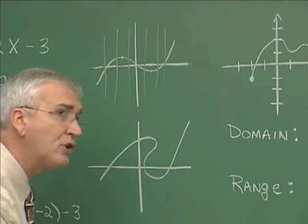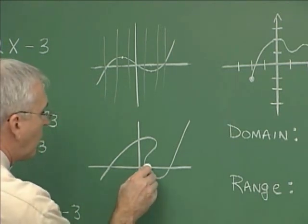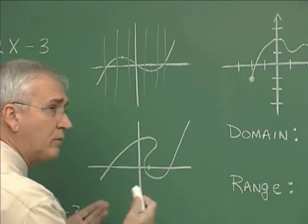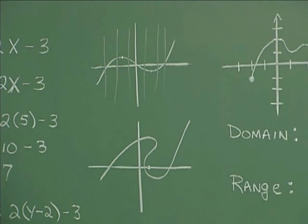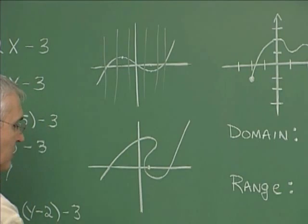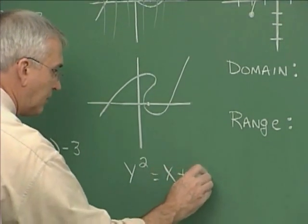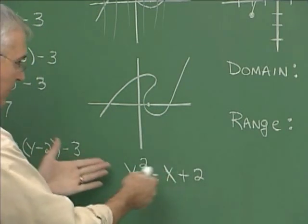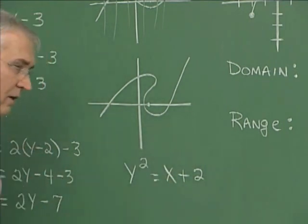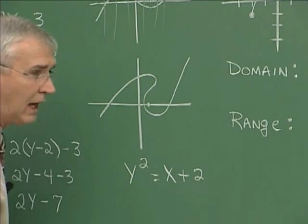This is an example of a non-function relationship between x and y. It's not a function because for one value of x there would be more than one value of y that puts a point on the graph. The algebraic form that is not functional would be something like y squared equals x plus 2. This doesn't represent the graph of a function because it's a parabolic curve opening sideways, and a vertical line test would fail.